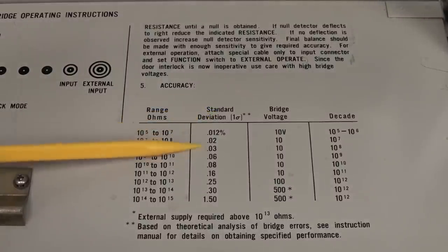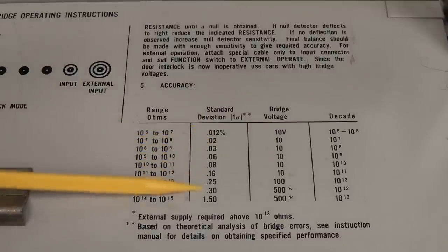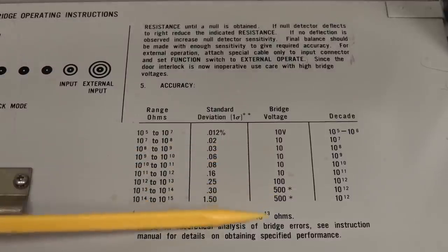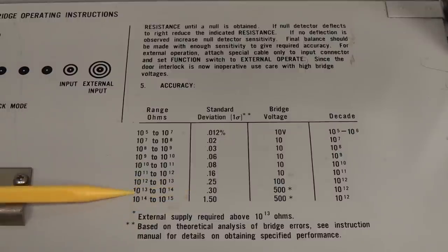I mean, they call it standard deviation, but it's basically a specification from basically 0.01%. Even right up to the terra-ohms range, you're still talking 1.5%. Not too shabby, huh? But as you can see, on the high end, once you get to the really extreme, you know, hundreds of, you know, tens to hundreds of gig-ohm range and the terra-ohm range.